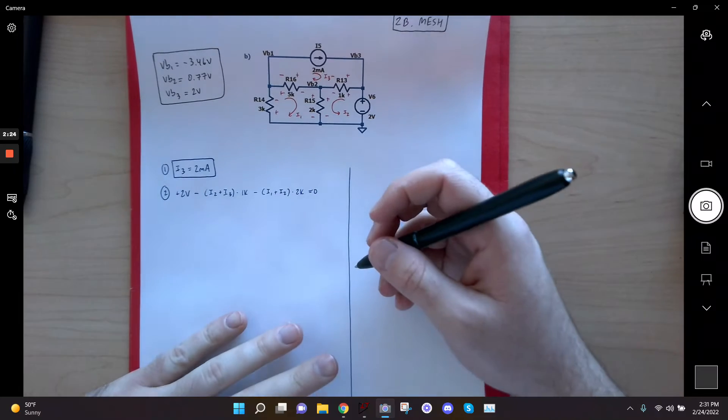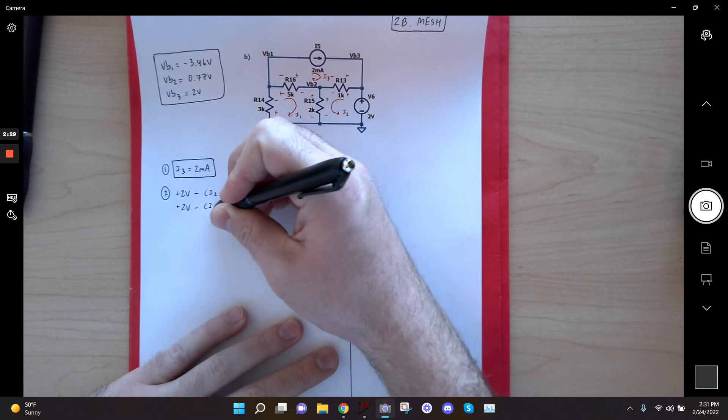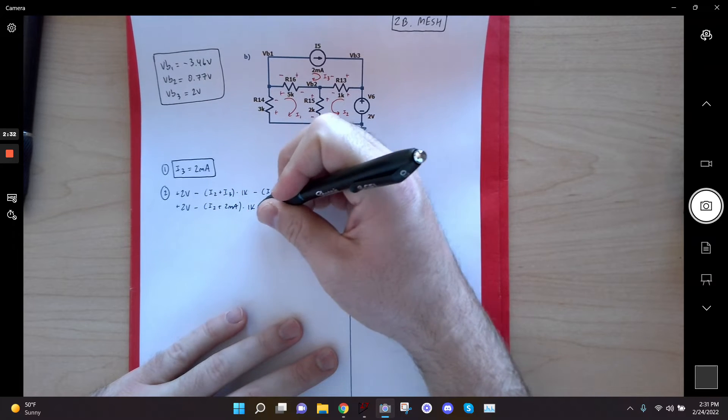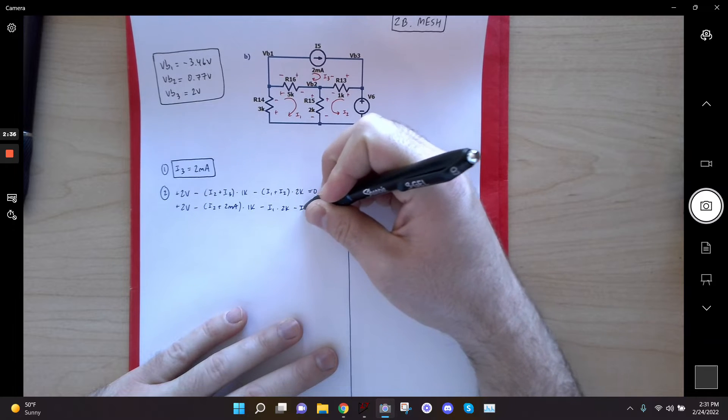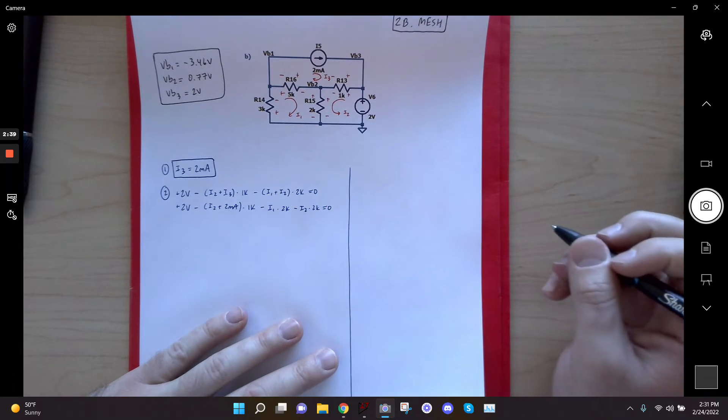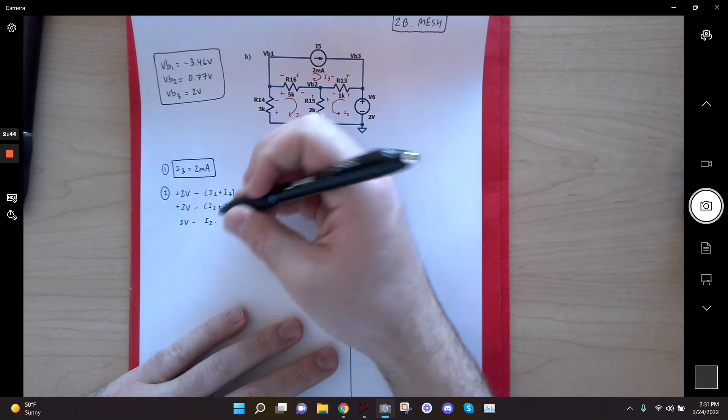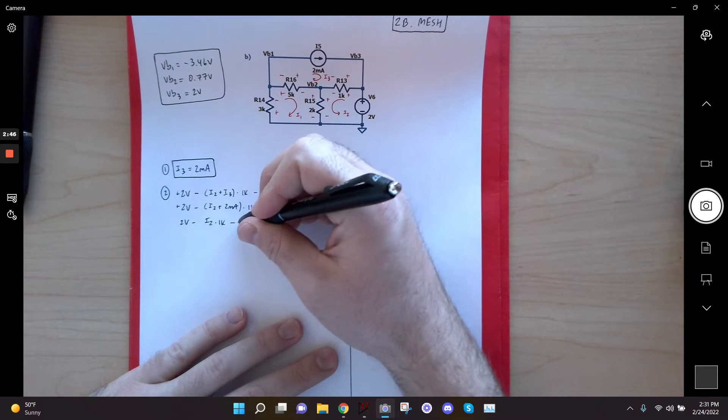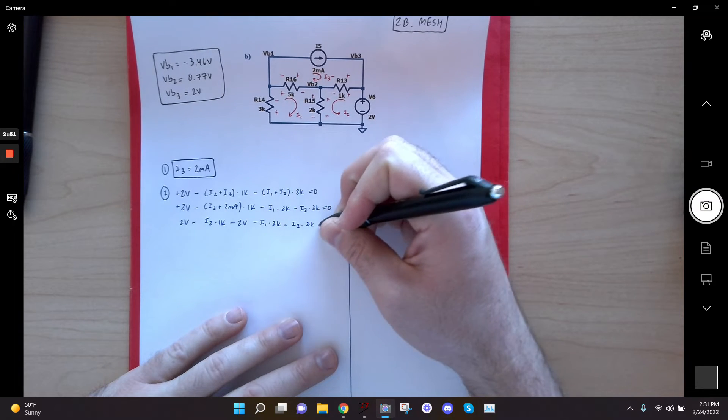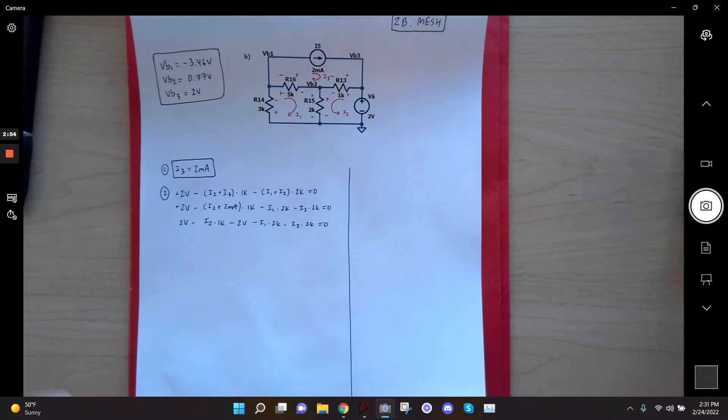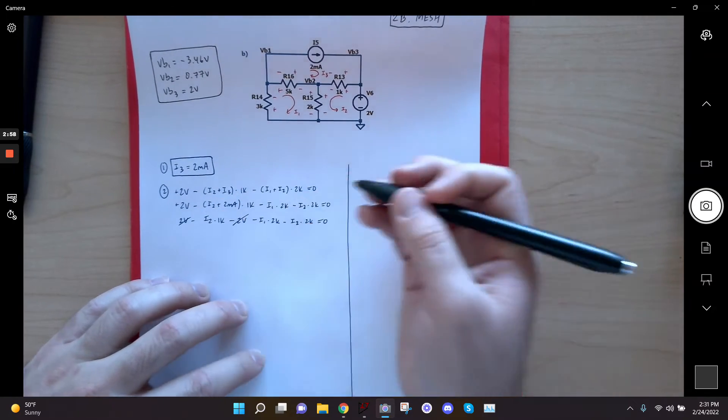And now I'll go ahead and simplify this equation as far as I can before I make the other equation. So this is I2 plus 2 milliamps times 1K minus I1 times 2K minus I2 times 2K equals 0. And now this is going to be 2 volts minus I2 times 1K minus 2 volts minus I1 times 2K minus I2 times 2K gives me 0. And now notice that this plus 2 volts and minus 2 volts, they subtract each other out, so that's gone. And that's okay. Some people got a little worried about that.